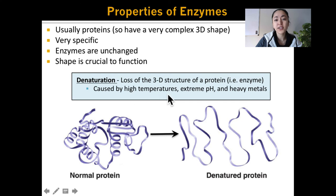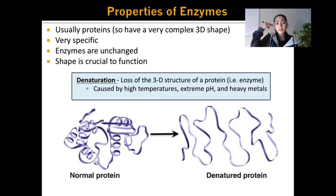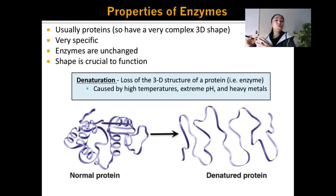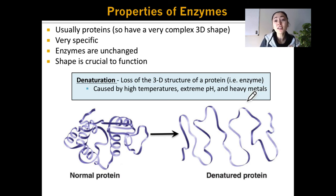What can cause denaturation? High temperatures can cause denaturation. This is why fevers can be very dangerous for you — your body's temperature is going above what is optimal for the enzymes in your body, so those enzymes might stop functioning properly. Extreme pH is also very bad for enzymes — a pH that's too low or too high can prevent an enzyme from functioning properly. Heavy metals can also affect the functioning of proteins. This is why mercury poisoning is so dangerous: too much mercury in your body can actually cause the enzymes to stop working and denature.